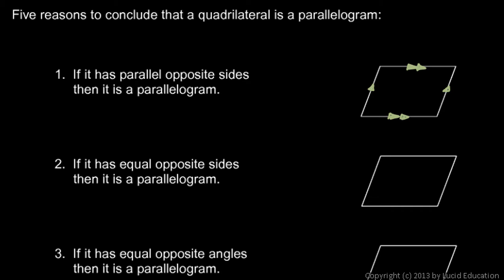These other statements we will need to prove. Number two: if it has equal opposite sides, then it is a parallelogram. Let's mark this side equal to this one, and this side equal to this one. We've already shown that if it is a parallelogram then it has equal opposite sides, but this statement is the converse of that. Just because a statement is true doesn't mean its converse is true, so we still need to prove that if it has equal opposite sides, then it is a parallelogram.